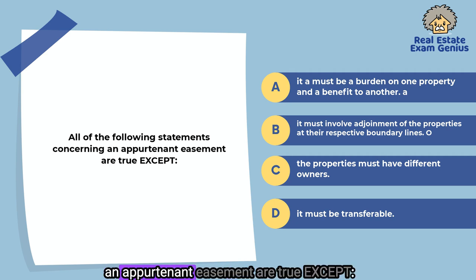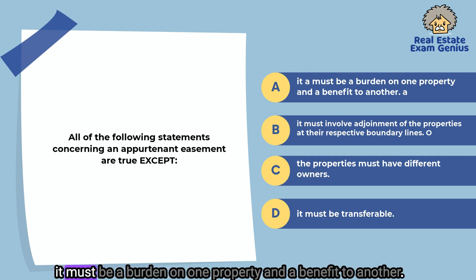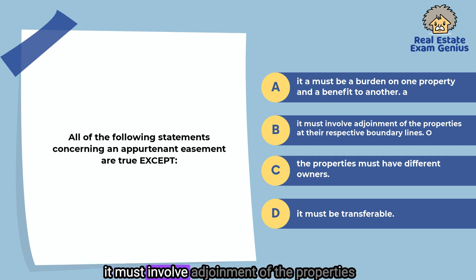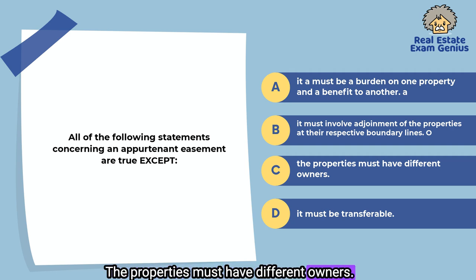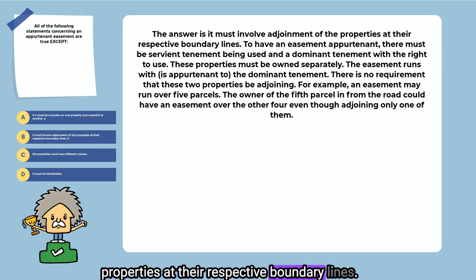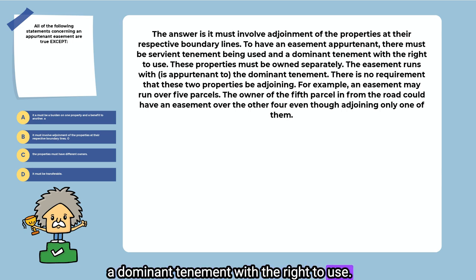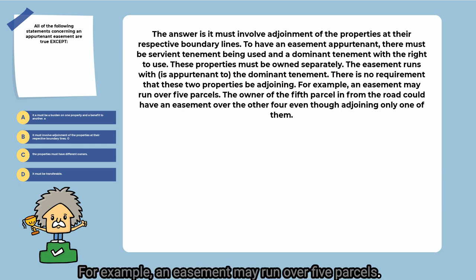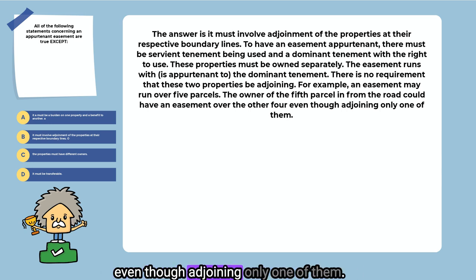All of the following statements concerning an appurtenant easement are true except: it must be a burden on one property and a benefit to another, it must involve a joinment of the properties at their respective boundary lines, the properties must have different owners, or it must be transferable. The answer is it must involve a joinment of the properties at their respective boundary lines. To have an easement appurtenant, there must be a servient tenement being used and a dominant tenement with the right to use. These properties must be owned separately. The easement runs with the dominant tenement. There is no requirement that these two properties be adjoining — an easement may run over five parcels.